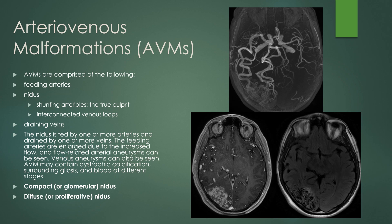The AVM may contain dystrophic calcification, giving it a popcorn calcification appearance. There can be surrounding gliosis in the brain tissue, and it can contain blood at different stages depending on if the AVM has hemorrhaged or not. There are two types of niduses: the compact or glomerular nidus, and the diffuse or proliferative nidus.